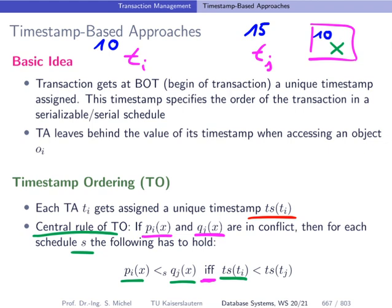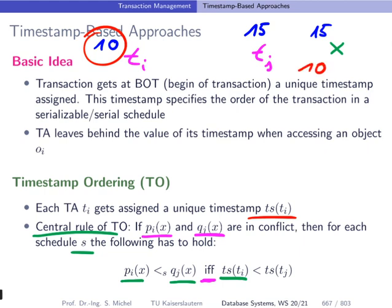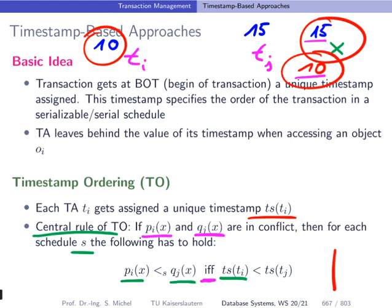In the earlier example, if TJ writes to X leaving timestamp 15, and then transaction TI with timestamp 10 wants to read from X, we compare 10 to 15. While 10 is strictly smaller than 15, this is not according to our rule, because the timestamp of transaction I is smaller — meaning the conflict operation ordering should be reversed. TJ's write was executed before TI's read, which is not in line with the timestamp ordering rule.